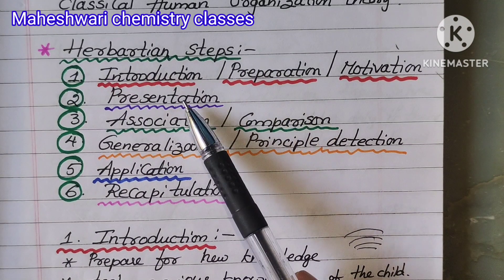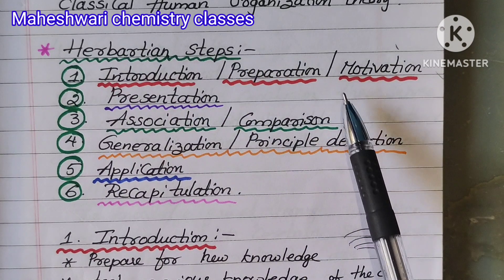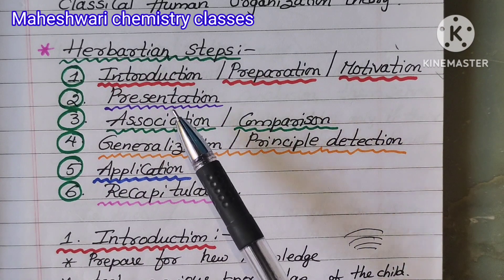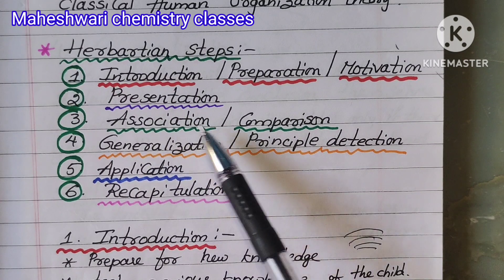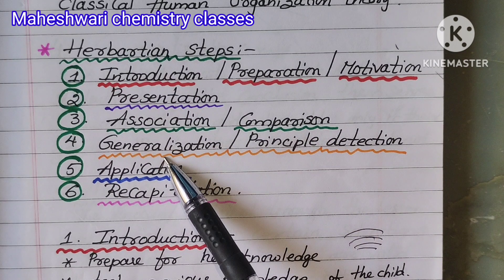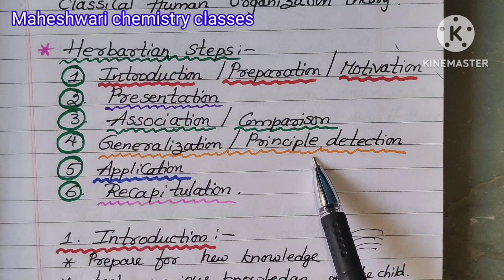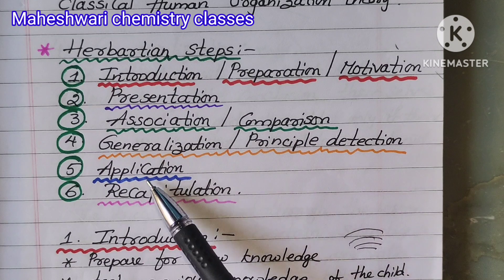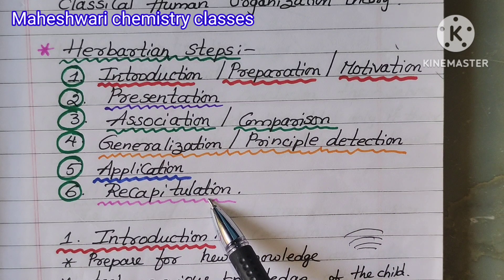In the Herbartian Steps, the first step is Introduction and Motivation. Second is Presentation. Third is Association, which is nothing but Comparison. Fourth is Generalization, which is nothing but Principle Detection. Fifth is Application. Sixth is Recapitulation.